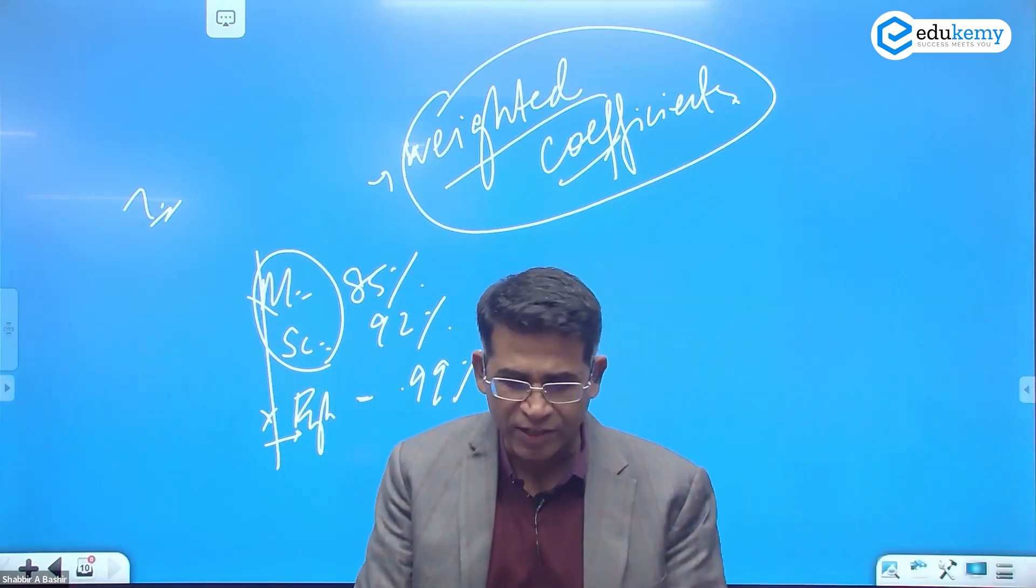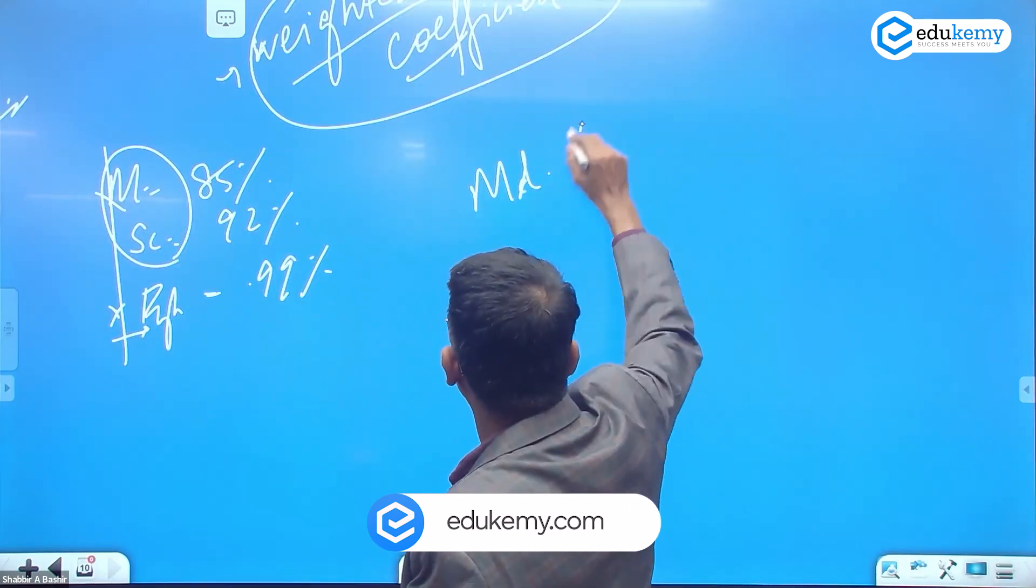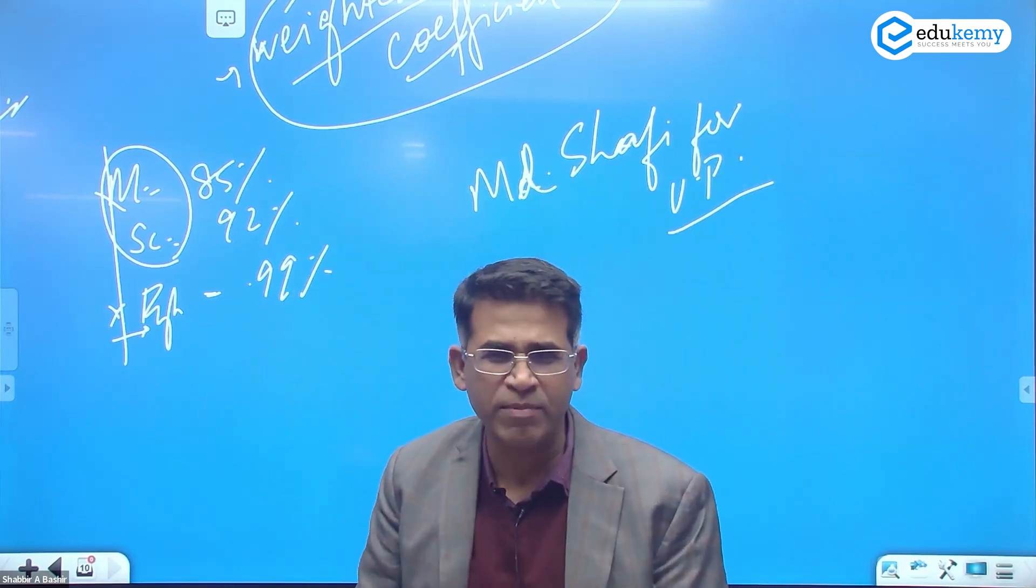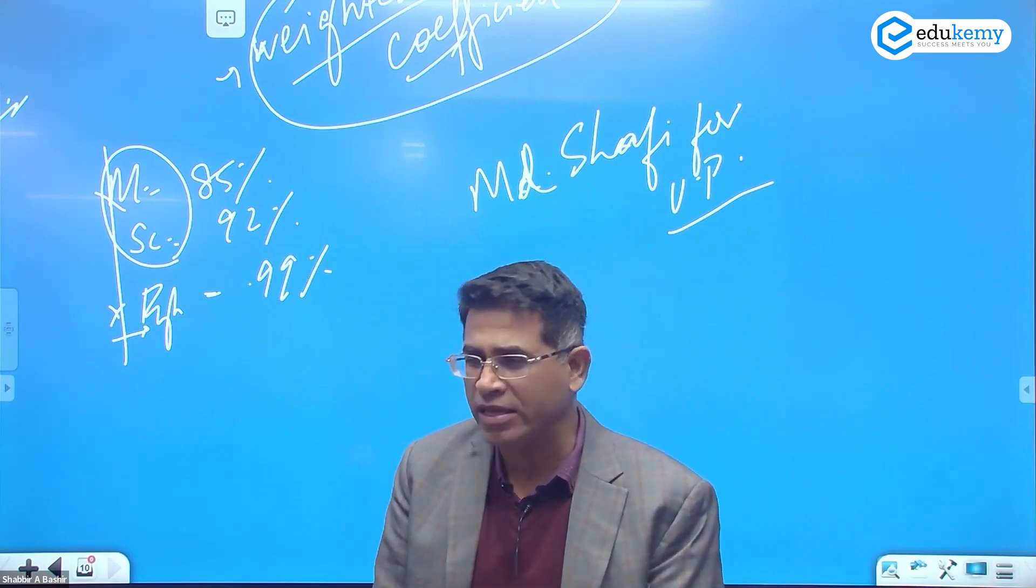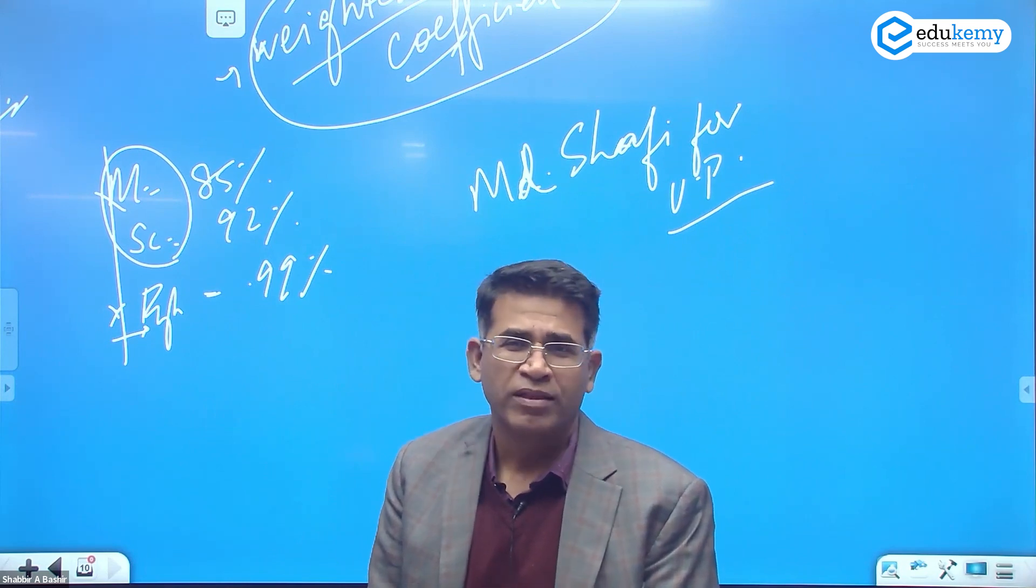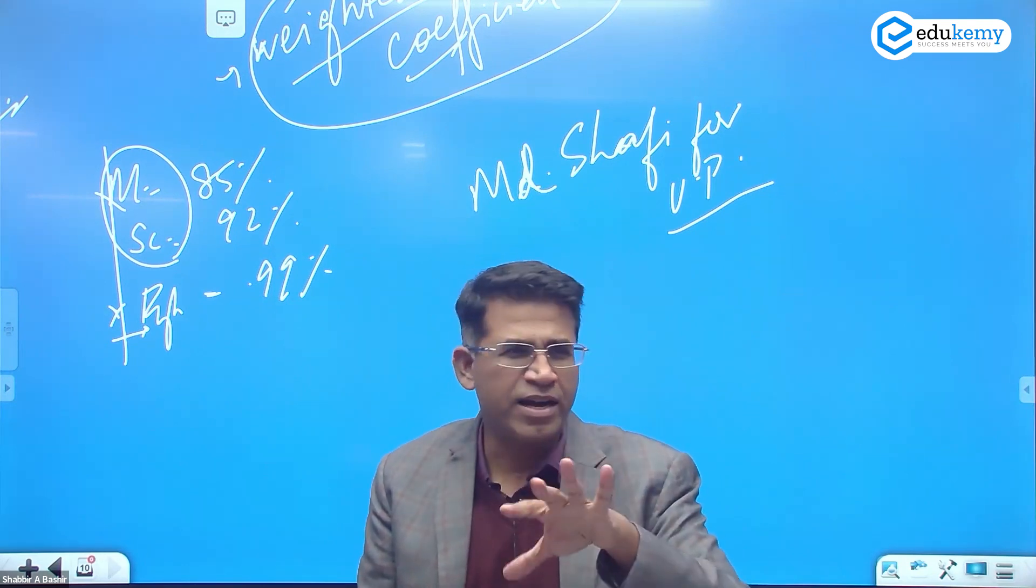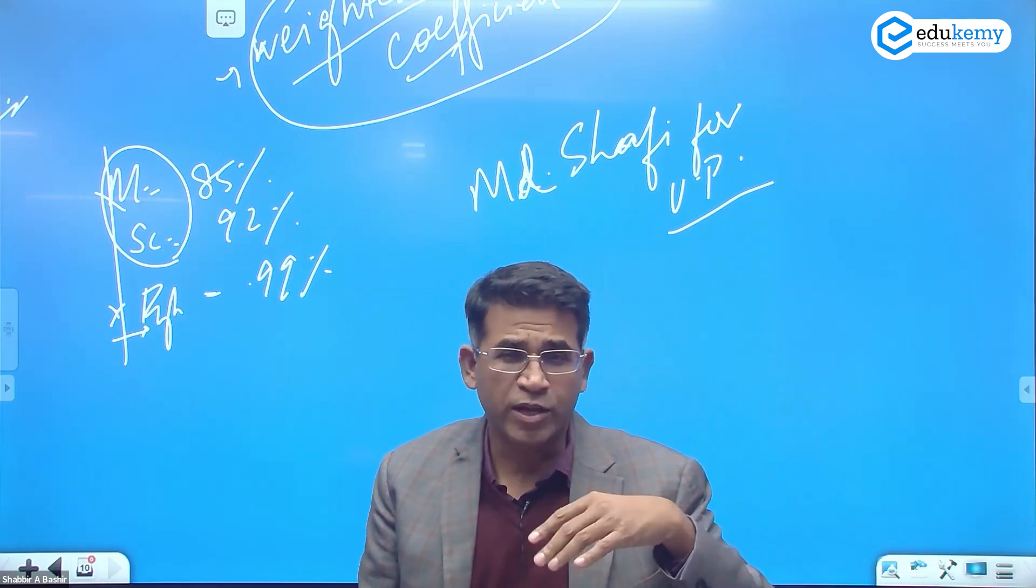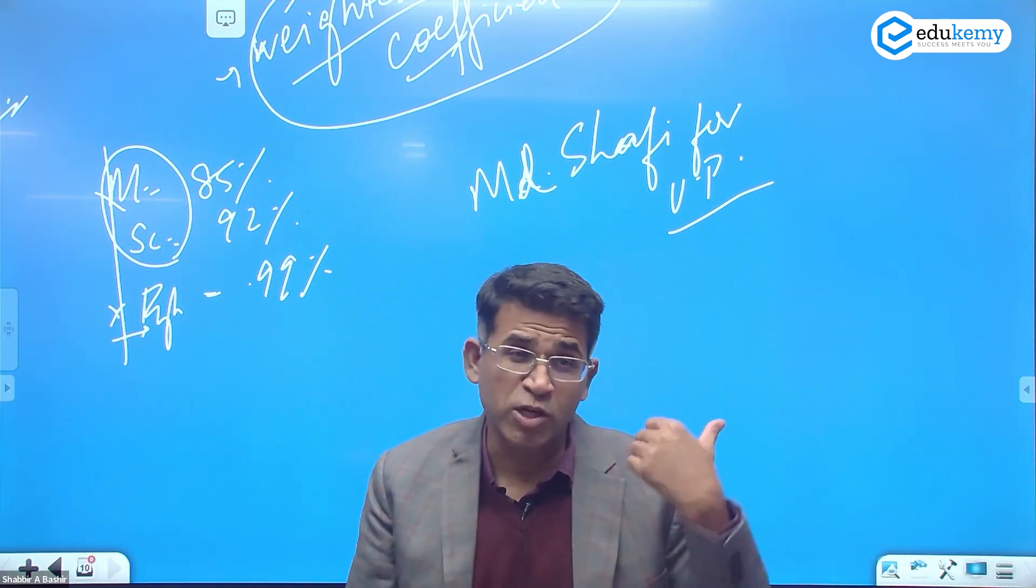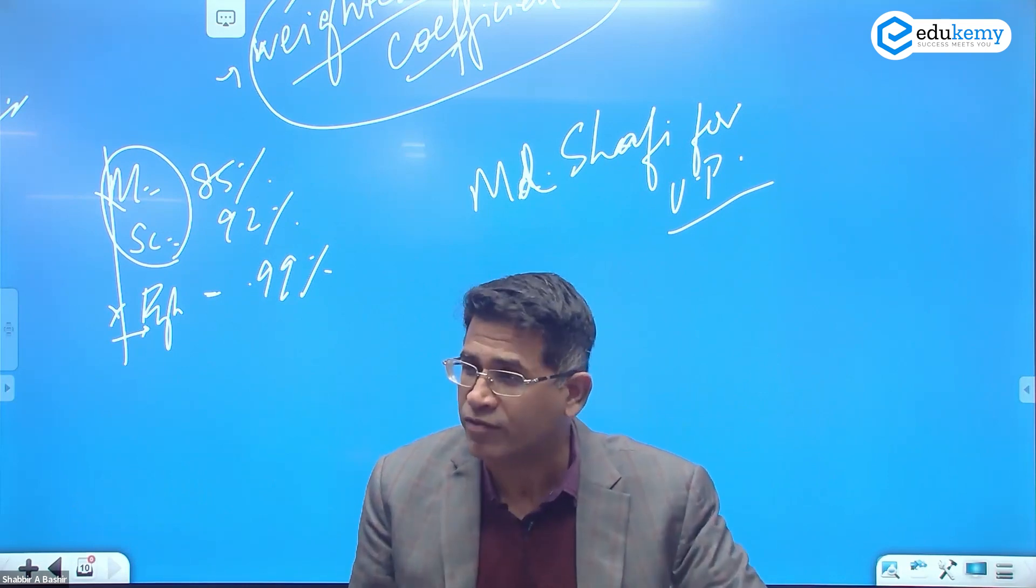In India, a ranking method was used by Mohammad Shafi in UP for about 15 crops. Some scholars are authorities in their domain. Savindra Singh in India is almost an authority in geomorphology. In human aspects, Majid Hussain was considered an authority. Mohammad Shafi is an authority in agricultural geography, R.L. Singh in settlement geography. Some of these names you better know to add value to your answer.